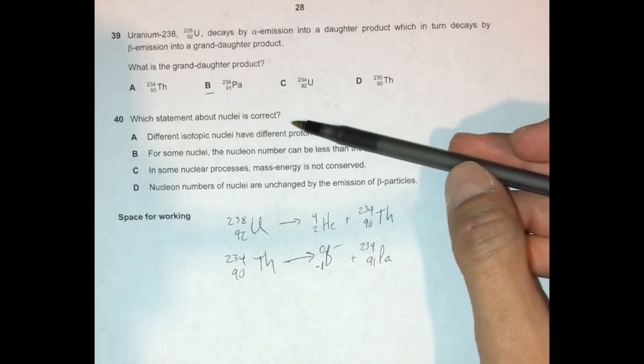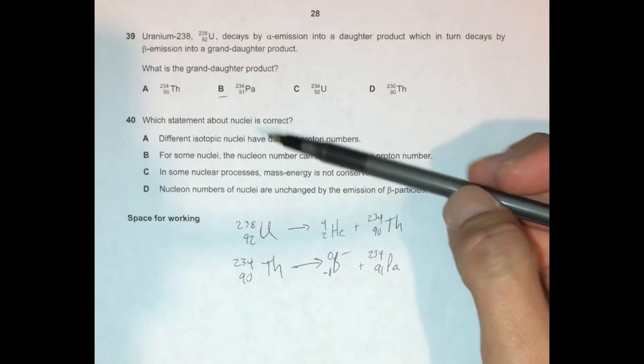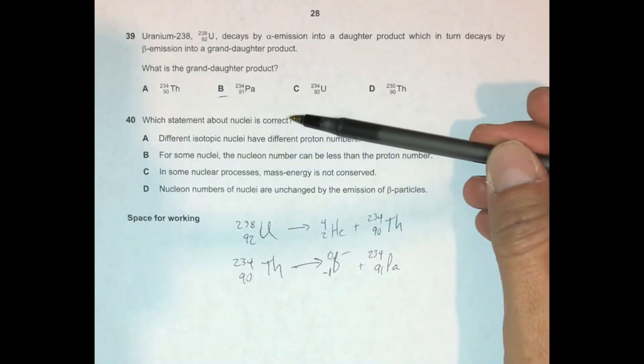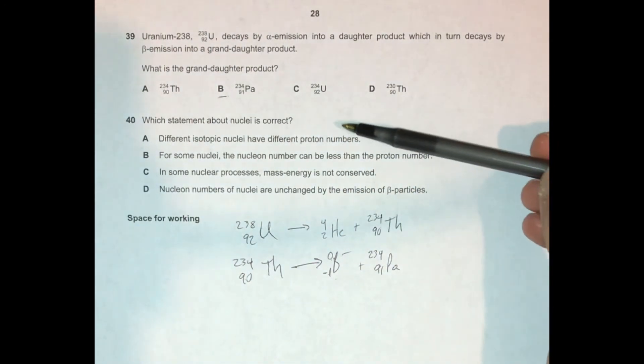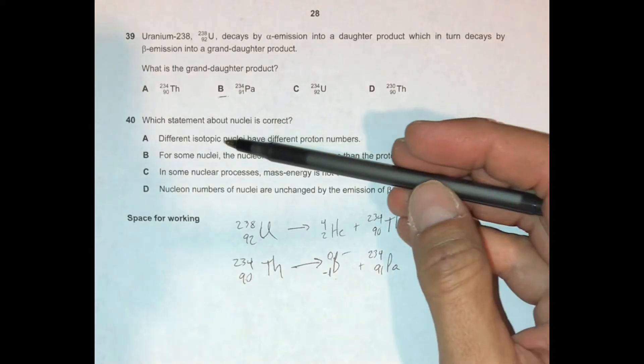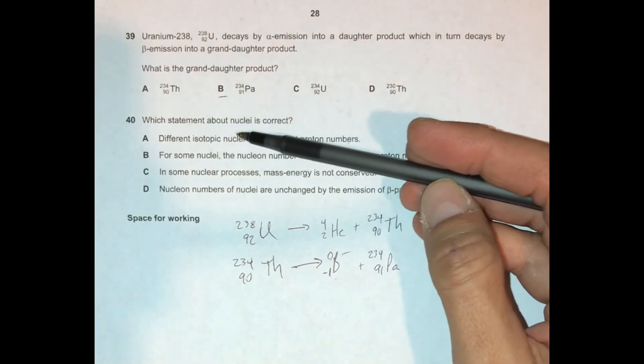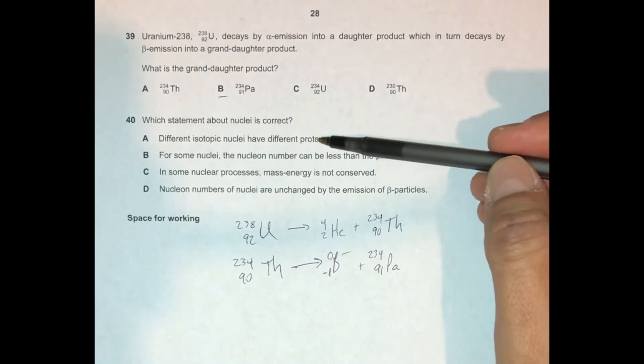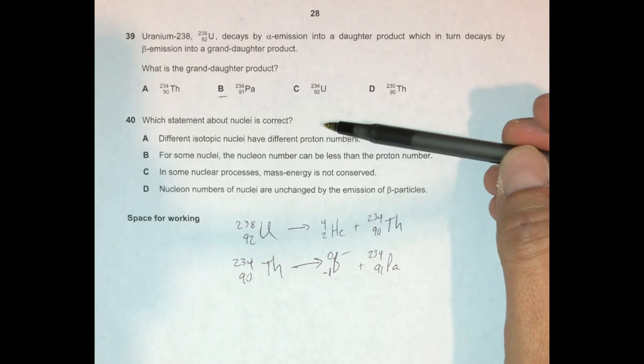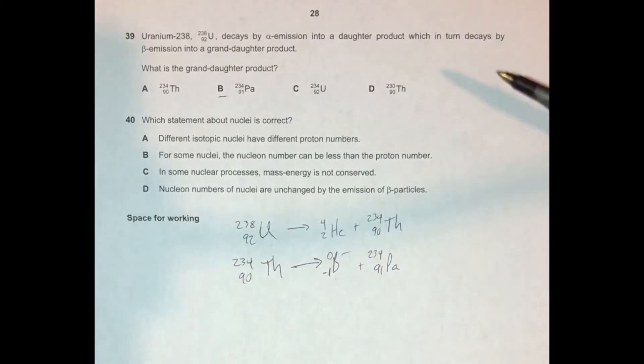We've kind of touched on the answer to question 40 here, but let's go through it. It says: which statement about nuclei is correct? A, different isotopic nuclei have different proton numbers. Well, we know that's not correct. We've been saying that we define the chemical species by the number of protons. And so different isotopic nuclei have different neutron numbers. They have different numbers of neutrons. If they had different proton numbers, they wouldn't be isotopes. They'd be whole different chemicals.